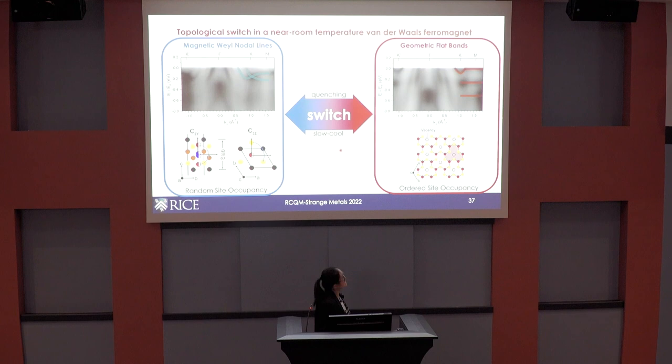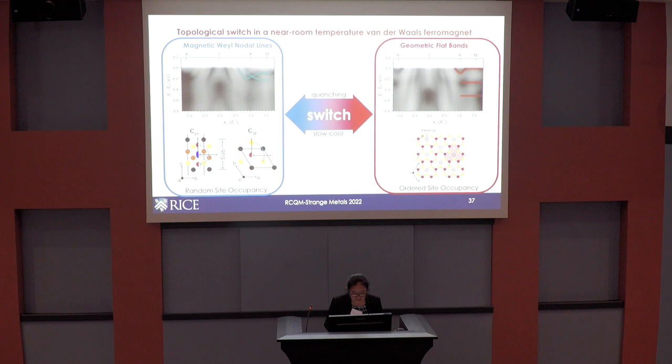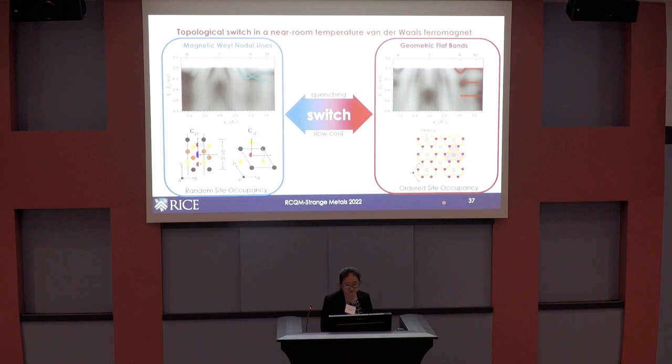To summarize: we see a dichotomy of the electronic structure — a magnetic Weyl nodal line phase and a geometric flat-band phase — and we can demonstrate switchability between the two types of phases. Our understanding is that, different from other kinds of crystal symmetry tuning, we can turn on and off this geometric frustration by utilizing vacancy ordering through the thermal annealing process. This is perhaps another way to realize in bulk crystals additional types of geometrically frustrated lattices.